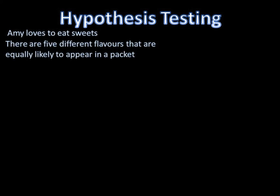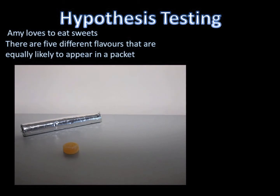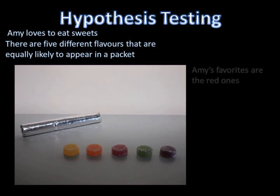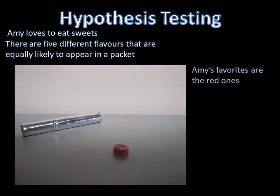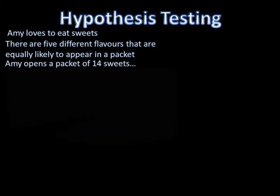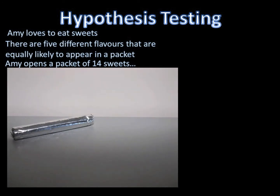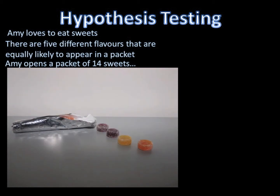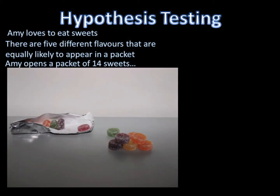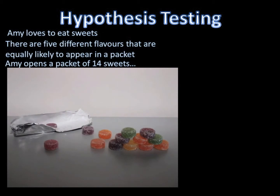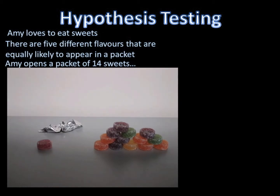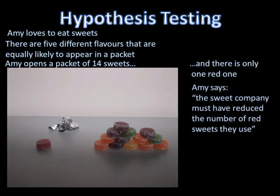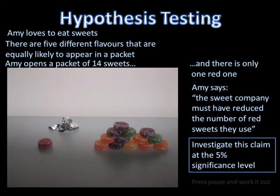Amy loves to eat sweets. There are 5 different flavours that are equally likely to appear in a packet. Amy's favourites are the red ones. Amy opens a packet of 14 sweets, but there's only one red one. Amy says the sweet company must have reduced the number of red sweets that they use.